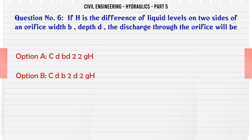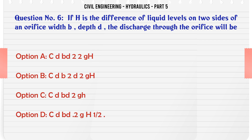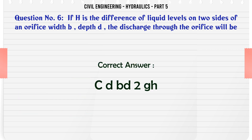If h is the difference of liquid levels on two sides of an orifice with depth d, the discharge through the orifice will be expressed by the formula involving Cd, b, 2g, and h. The correct answer is the formula: Cd × b × (2/3) × √(2g) × h^(3/2).